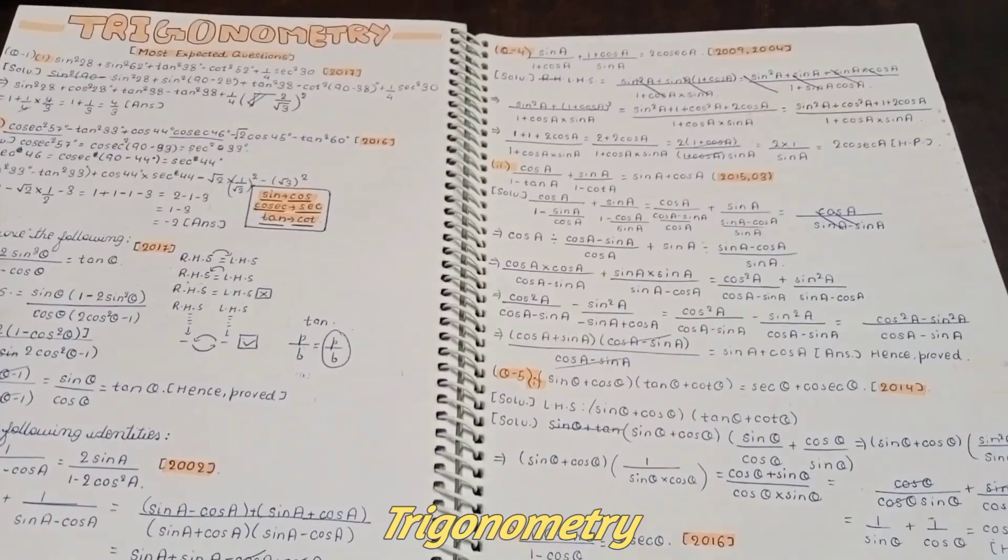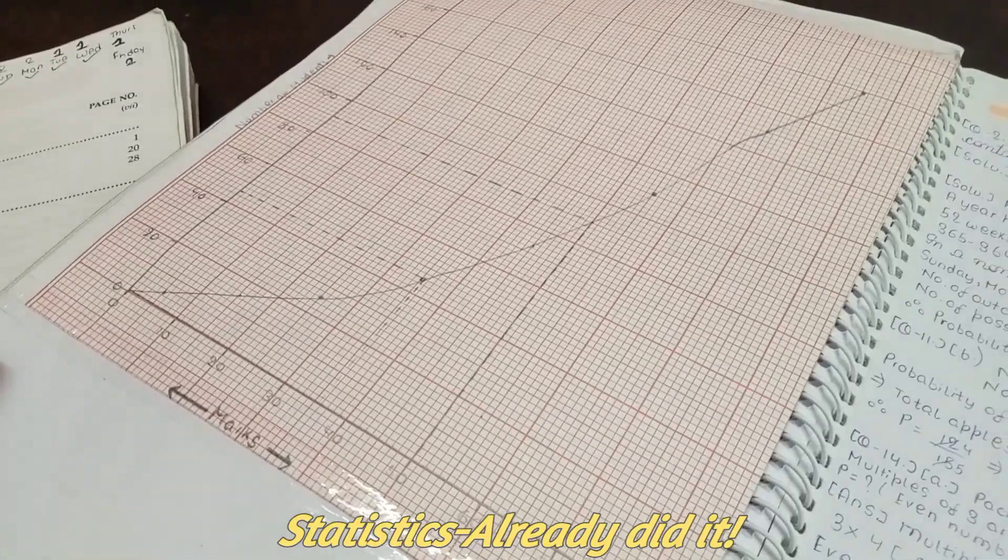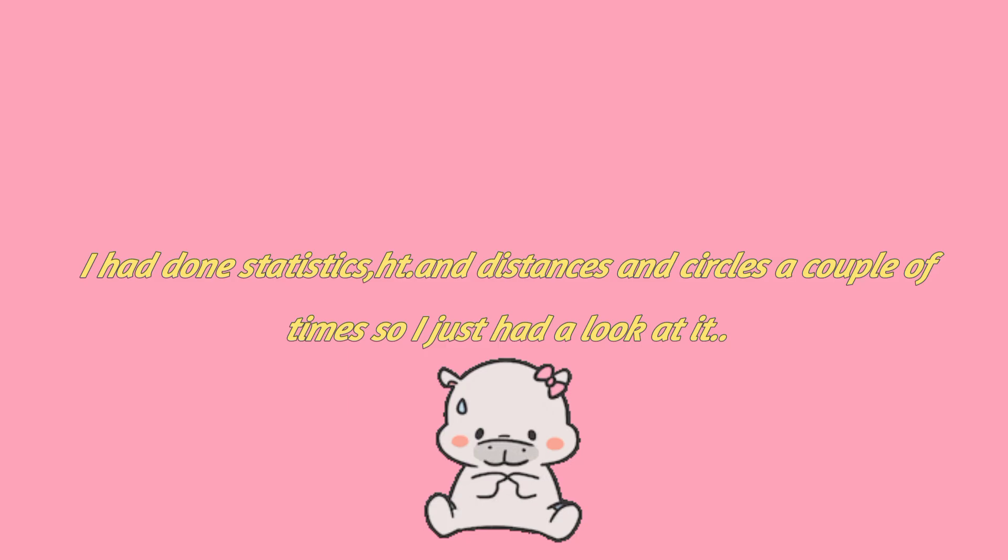Let me show you what I did. First I did mensuration, and then I started out with trigonometry, heights and distances, stats I already did that, and then probability. And I already told you that I had done statistics, heights and distances and circles a couple of times.